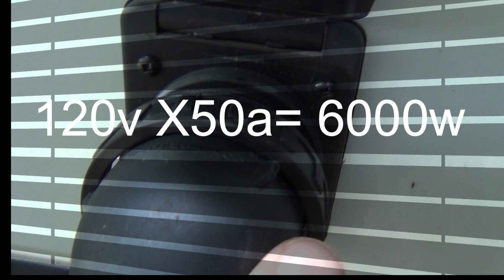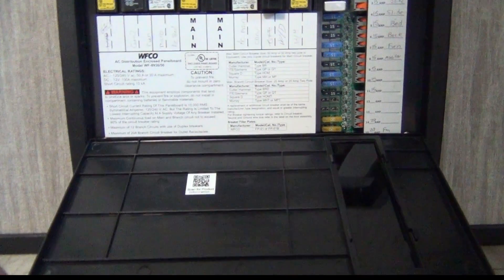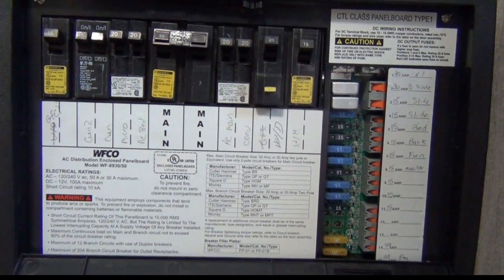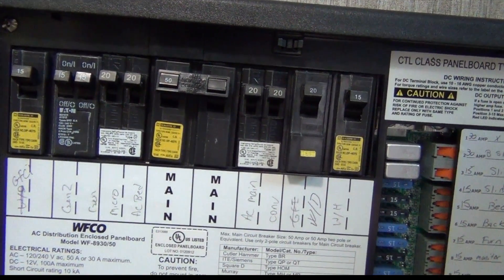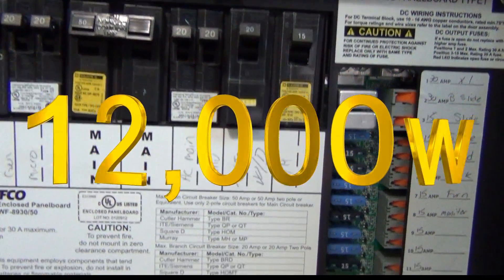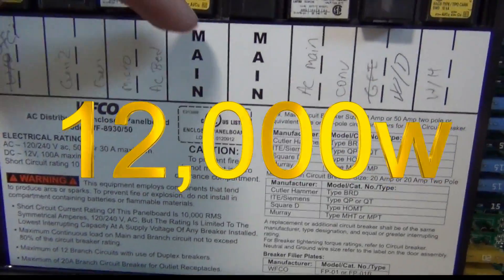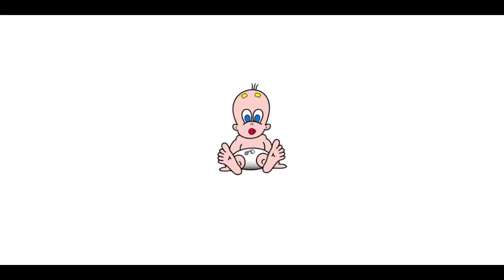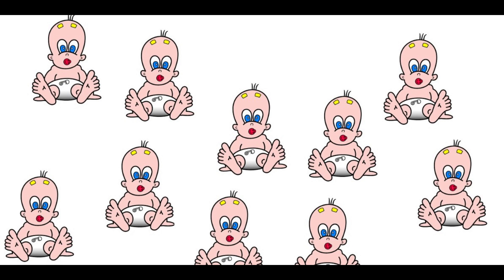Using our formula, if we take 120 volts and now multiply it by 50 amps, we get 6,000 watts. Remember, that's per leg, so now we can have a total between the two legs of 12,000 watts. That's three and a third times more draw than a 30 amp system. To put that into perspective, that's enough to feed 10 babies.